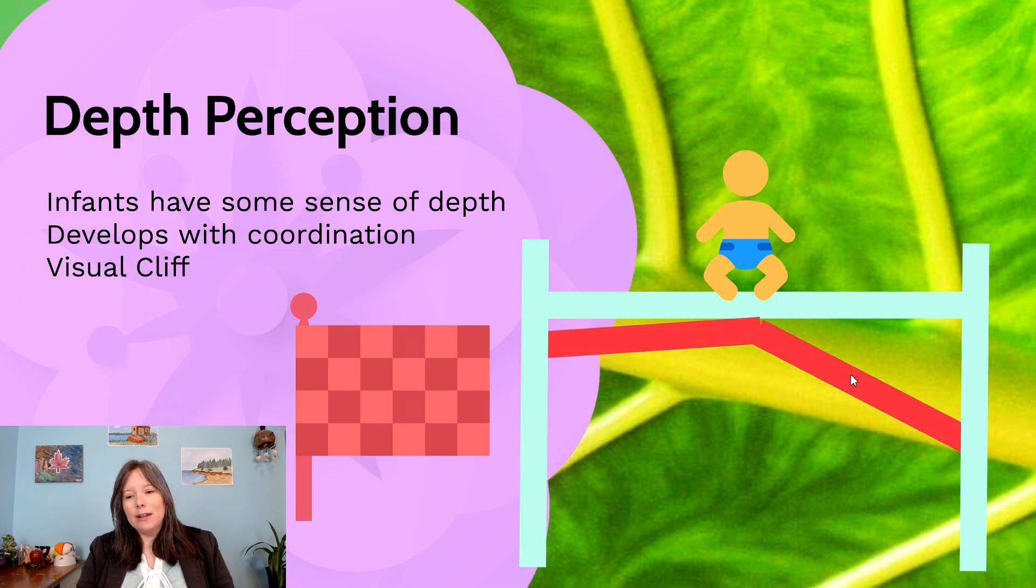And on the other side, the cloth went down on a very steep incline. And so the aim here was to see if the infant could differentiate between the checkerboard pattern going down gradually or going down steeply, and if they would get a sense of depth.